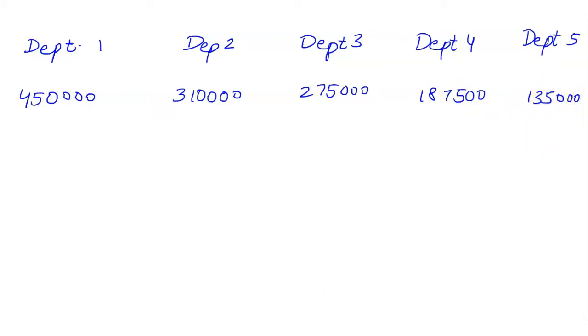Now our values for x1 plus u1 is 450,000, x2 plus u2 is 310,000, and x3 plus u3 is 275,000.